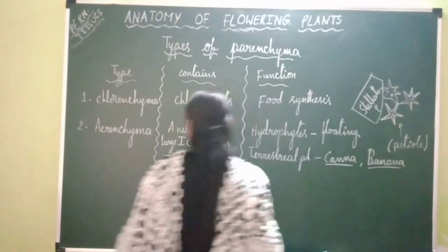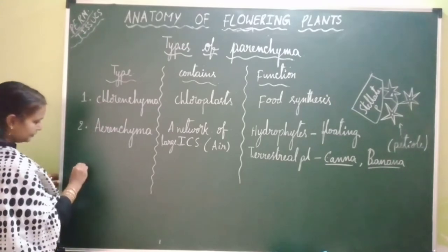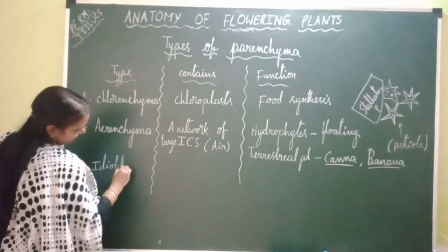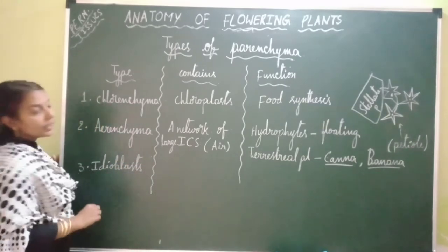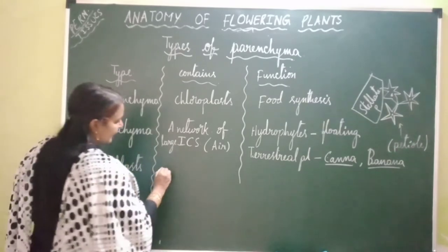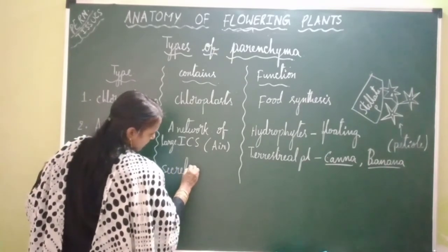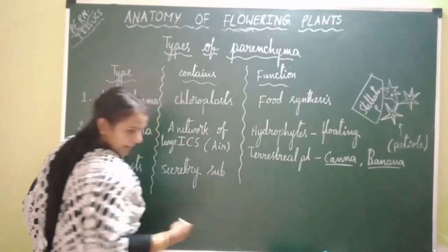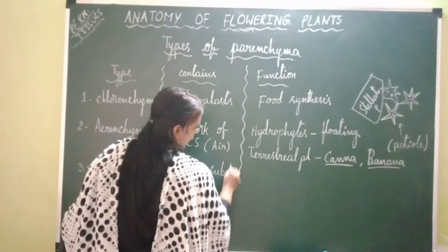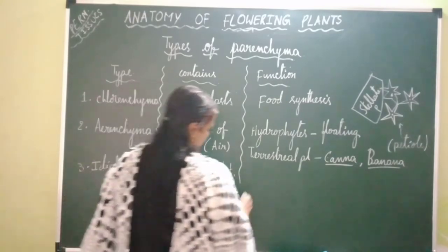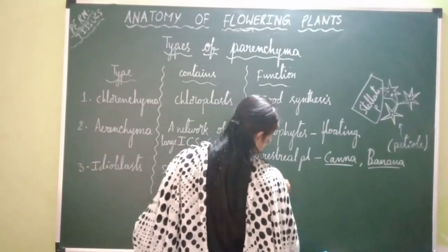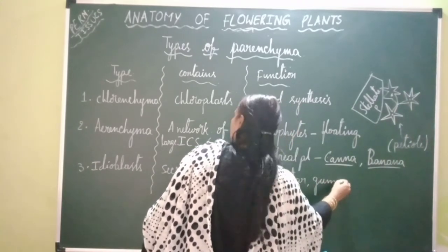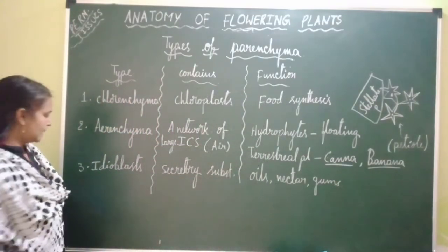The next type of parenchyma is idioblastic parenchyma. Idioblasts are parenchymatous cells which consist of secretory substances. These idioblastic parenchyma cells secrete substances like oils, nectar, gums, etc. So this is also called secretory parenchyma or idioblastic parenchyma.